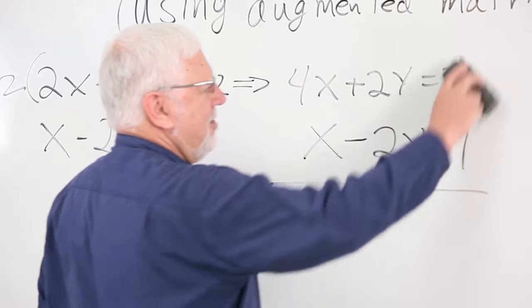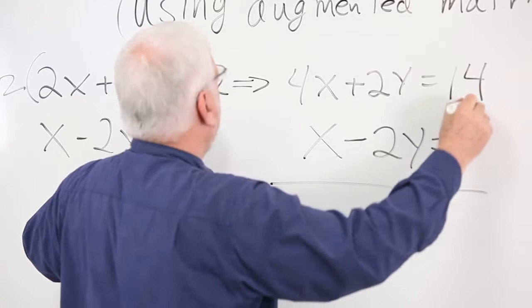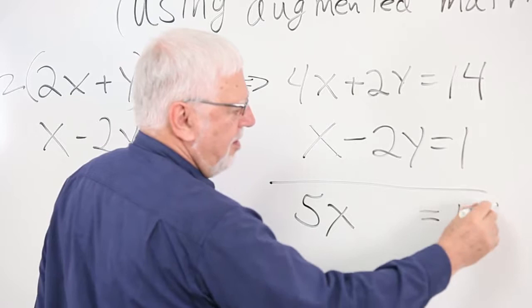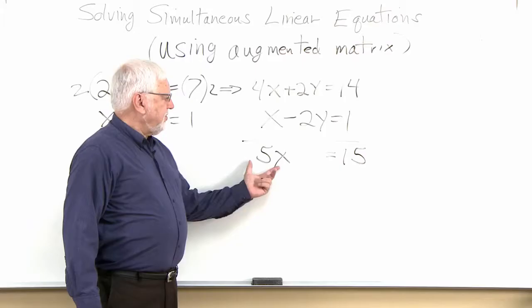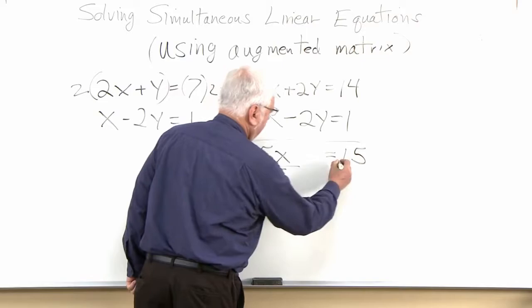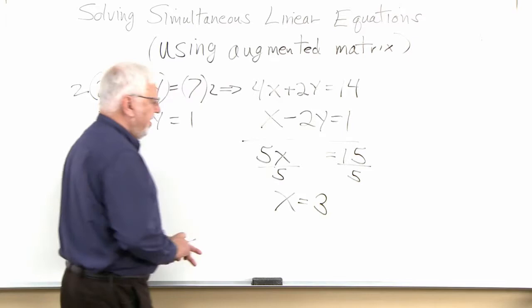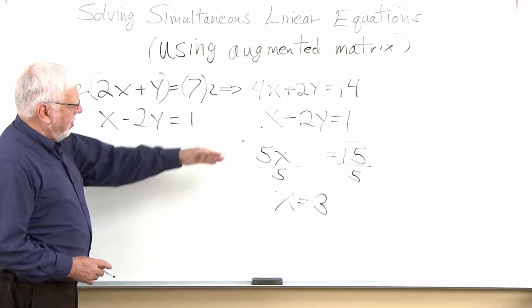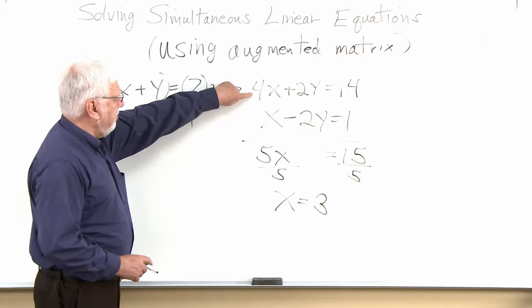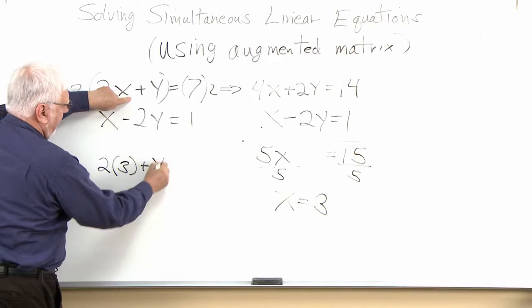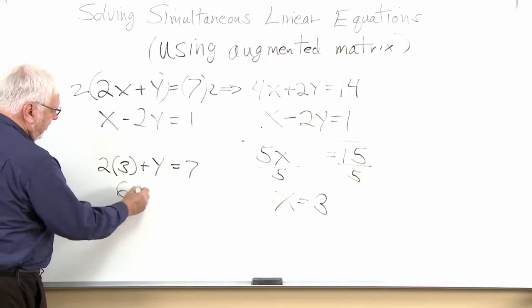Now we'll add the equations up. 4x plus x is 5x, 2y minus 2y cancels out, and 14 plus 1 is 15. So we have another equation with only one unknown. We divide both sides by 5 and get x equals 3. That's our x value at their common solution point. Now we plug x equals 3 back into the original equation: 2 times 3 plus y equals 7, which gives 6 plus y equals 7, subtract 6, and y equals 1.